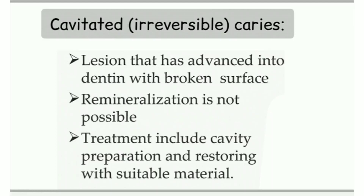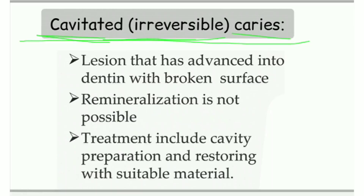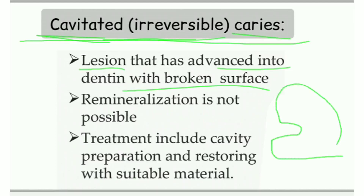Next, cavitated or irreversible caries is the sequence of reversible or incipient caries left untreated. The lesion has advanced into the dentine with a broken surface, so it is no more confined to enamel. A cavity formation is seen — a proper cavity structure is seen on the tooth. Remineralization is not possible because it has progressed into the dentine. Treatment includes cavity preparation and restoration with suitable restorative material.